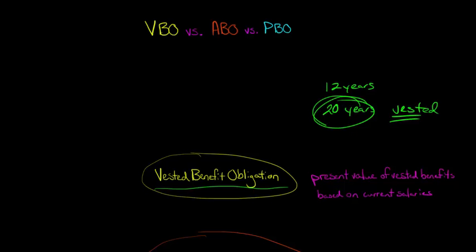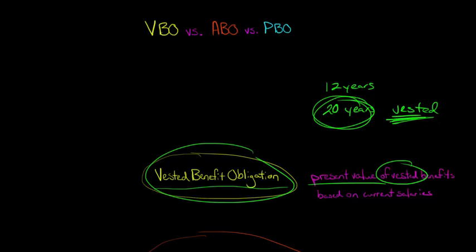And so when they've actually worked there 20 years, then you would say that the benefits have vested. So when we just look at the present value of the vested benefits, that's the VBO, the Vested Benefit Obligation.